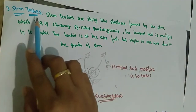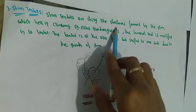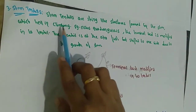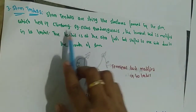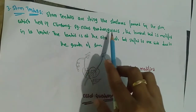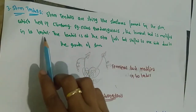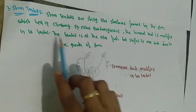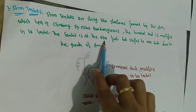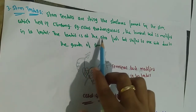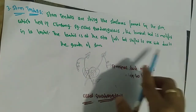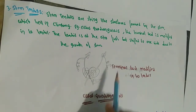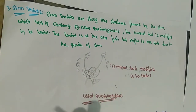The next type is stem tendrils. Stem tendrils are string-like structures formed by the stem which help in climbing. Example: Cissus quadrangularis, where the terminal bud is modified into a tendril. The tendril is situated at the apex first, then it shifts to one side due to the growth of the stem.